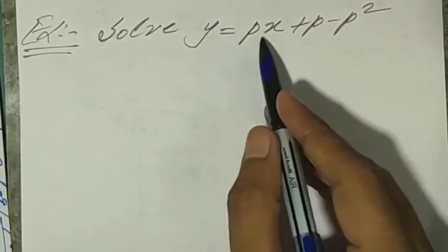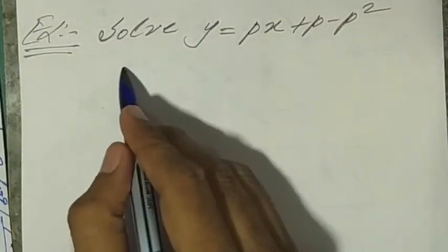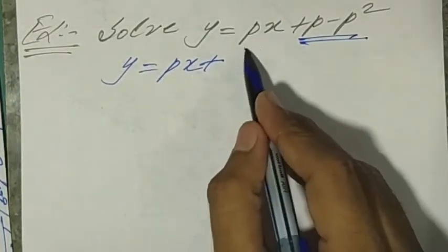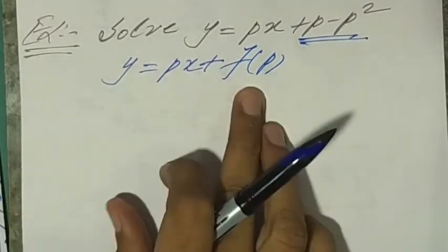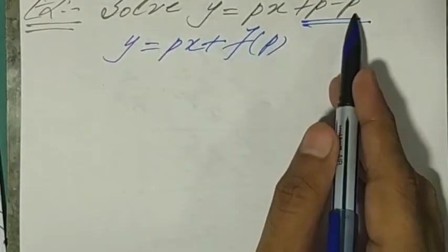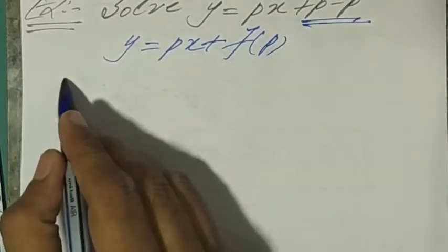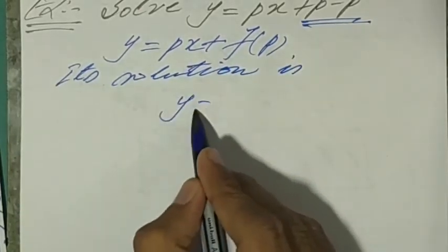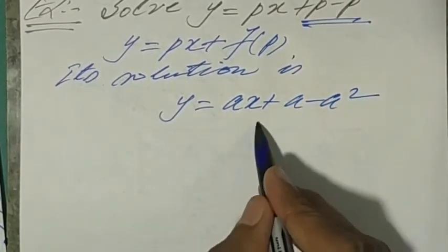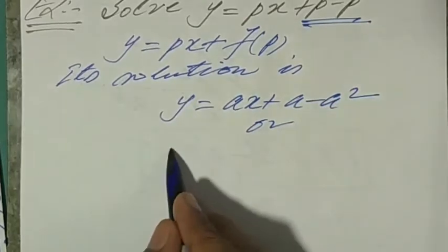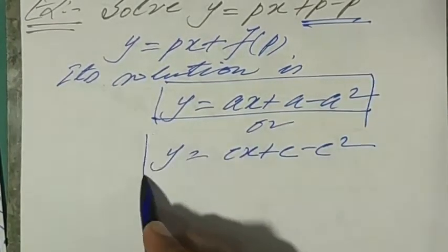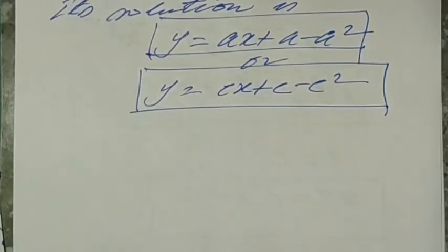Example 1: solve y = px + p - p². This is clearly in the form y = px + f(p), so it is a Clairaut's equation. Its solution is simply y = cx + c - c² (replacing p by c), or equivalently y = ax + a - a² using any arbitrary constant.